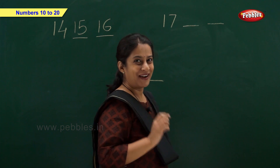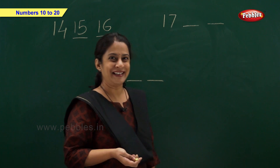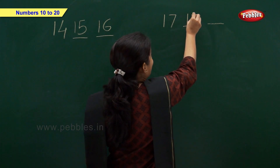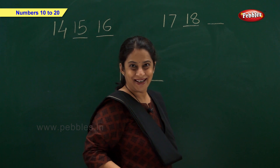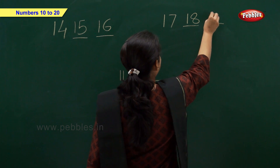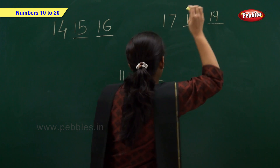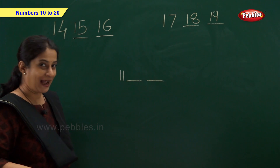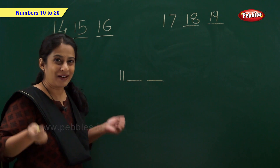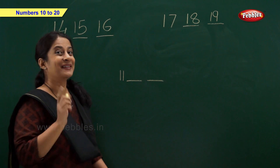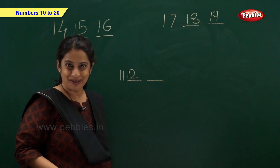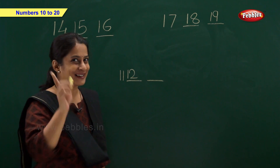Tell me fast, I am waiting! Write: after 17, number 18; and after 18, number 19. And now we have number 11 — which number comes after 11? Write number 12, and after number 12, number 13.